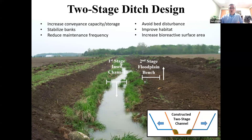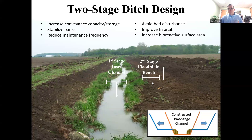The two-stage design would stabilize the bank — the floodplain acting as an anchoring wedge to the ditch side slope — and reduce maintenance frequency. By having an inset channel with deeper, faster-flowing water, sediment stays in suspension, with some deposited on the floodplains. This approach avoids touching the bed, which is beneficial if there's habitat or biology worth preserving. Studies show you can get additional shading and potential coarsening of substrate. What we can say definitively is that with the increased bioreactive floodplain surface area, there's been good science showing nitrate and phosphorus reductions.